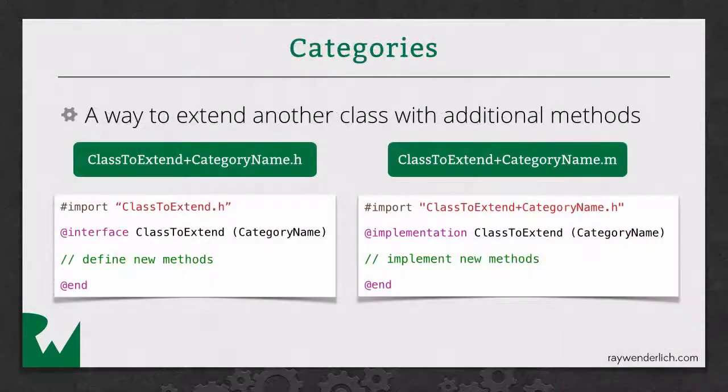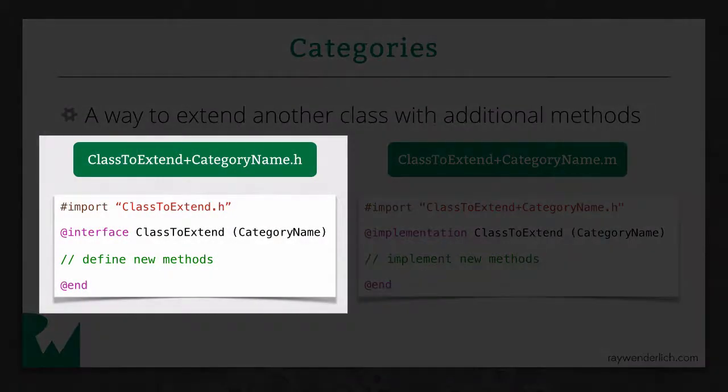Okay, so let's take a look at how the syntax works with categories. Over here on the left, you see you create a header file. And the header file, the naming convention is, you usually name it whatever the class is you're extending, and then a plus sign, and then whatever you want to name your category.